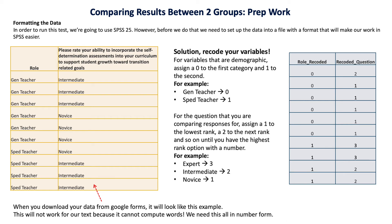The highest rank option gets the highest number, the second rank option gets the second highest number, and so on for your entire scale. You also need to recode your role — your general education teacher and sped teacher, for example, using zeros and ones. A general education teacher is a zero and a sped teacher is a one — this just tells SPSS whether the response is from a sped or gen teacher.